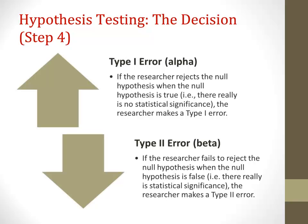Let's start with a type 1 error. If the researcher rejects the null hypothesis — that is, they find statistically significant results — when it's actually true, meaning they shouldn't have found statistical significance, the researcher makes a type 1 error.